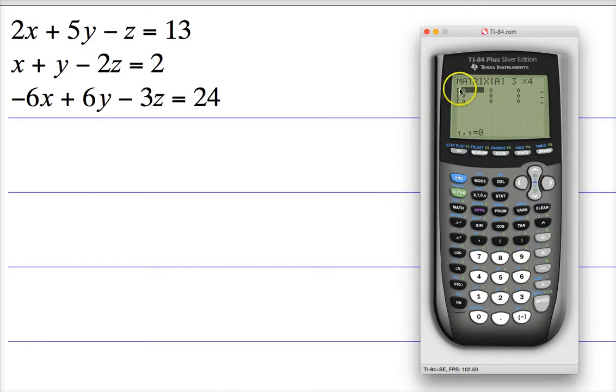So from here, each one of these columns represents a different variable or a different point. The first column will represent your x's, so 2, 1, and then negative 6. The next one would represent y's, this would represent z's, and the final one would represent just your answers, your equal parts.